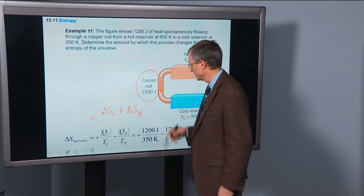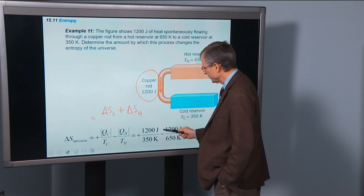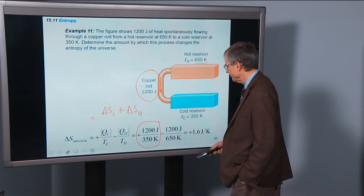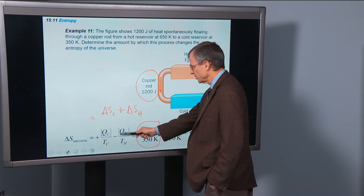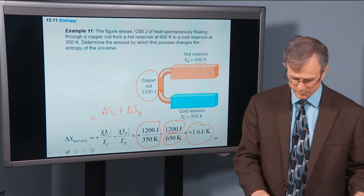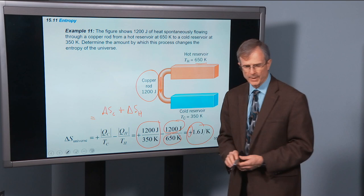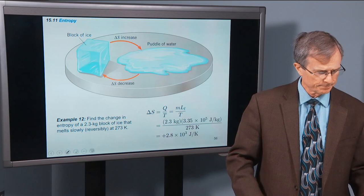So the change in entropy in the cold reservoir is the heat added to the cold reservoir divided by the temperature. Well that's 1,200 joules added to the cold reservoir divided by 350 K. And then the heat added to the hot reservoir is actually negative because it's subtracted from the hot reservoir. Just like we talked about in the previous example, we're subtracting 1,200 joules, 650 K. And so we end up with a change in entropy of 1.6 joules per Kelvin. And it increased. It's a positive number. And just like this, the entropy increases when an irreversible process occurs.